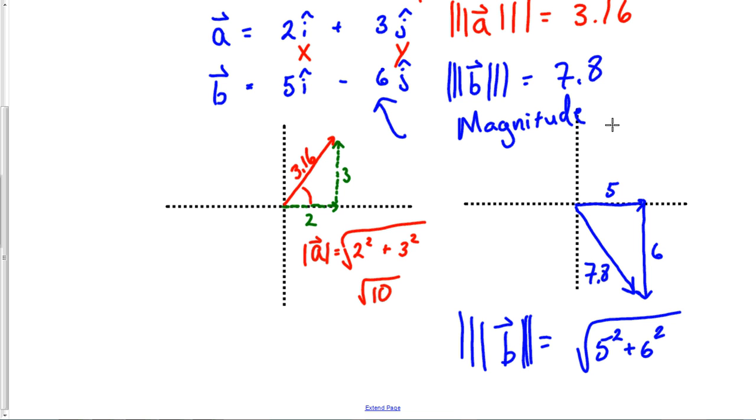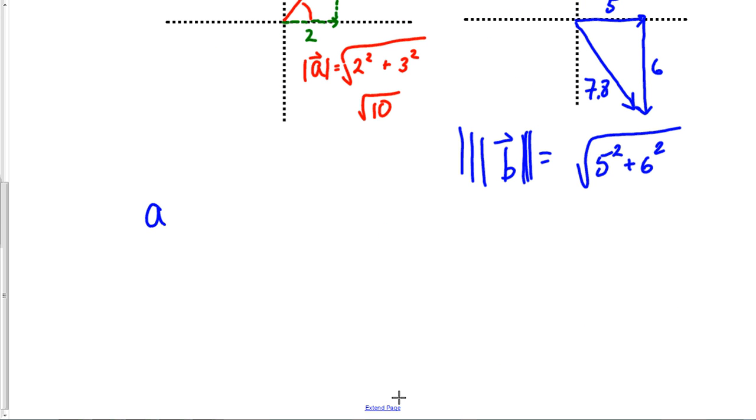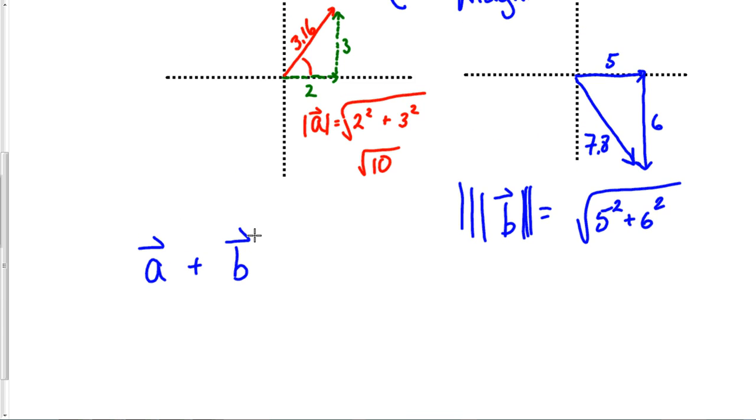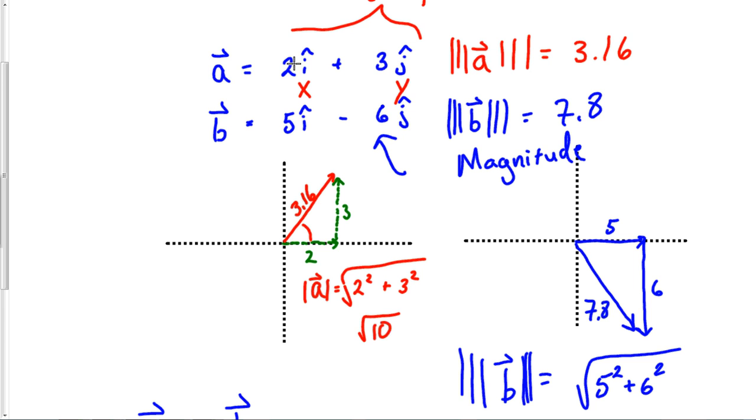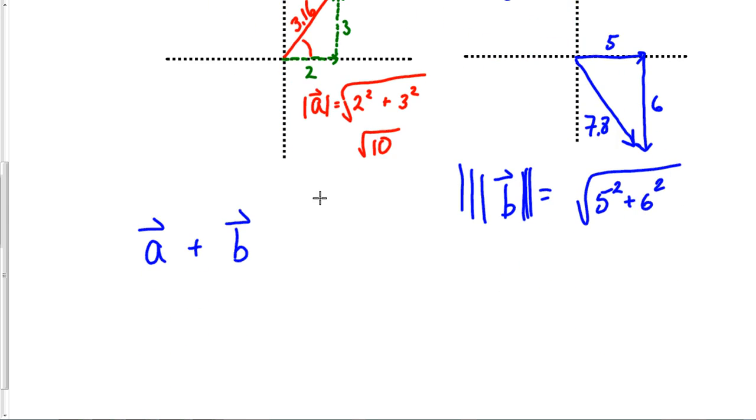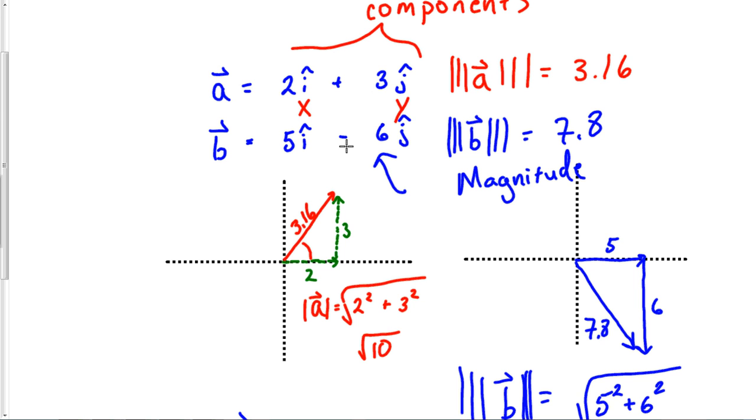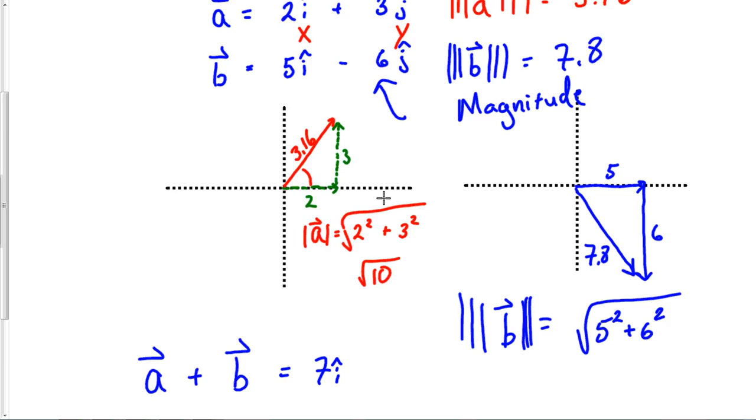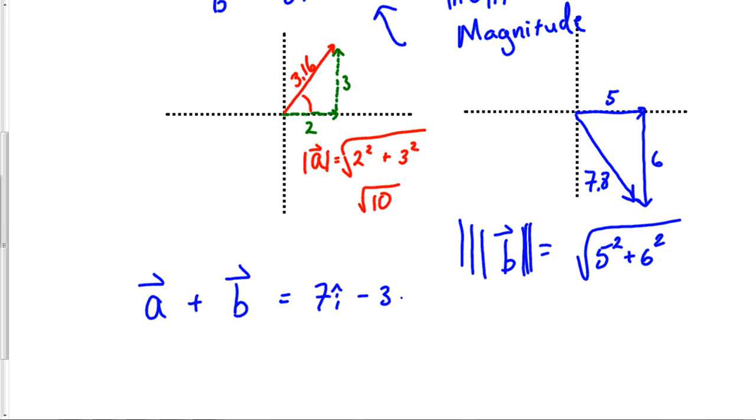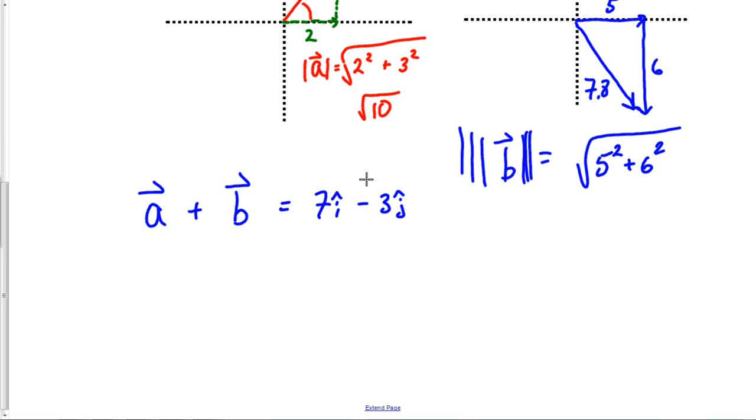A very common thing you're asked to do is find what is a plus b - sum those up. If you're asked to add the components of a and b, just sum them. Vector a is 2i and b is 5i, so 2 plus 5 equals 7i. Then a is plus 3j, b is minus 6j, so 3 minus 6 means we're at minus 3j.